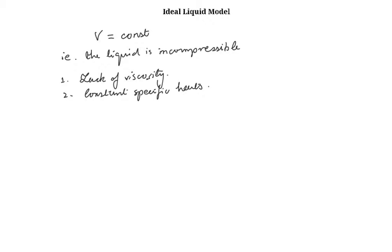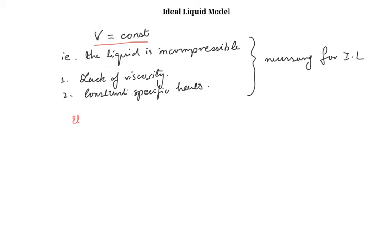These three assumptions or hypotheses are necessary for the ideal liquid model. The most important one is that the fluid must be incompressible. Now we are going to derive some relations regarding the ideal liquid model, and we are going to start with the internal energy U. The internal energy for the ideal liquid model is a function of temperature and volume.